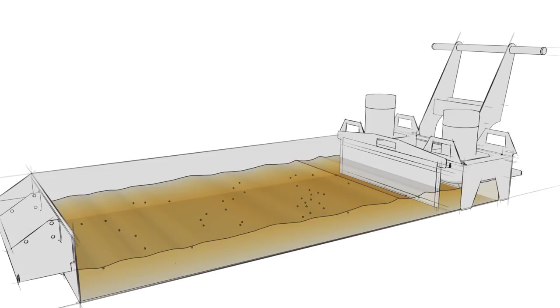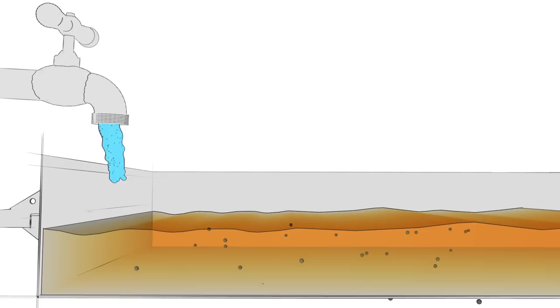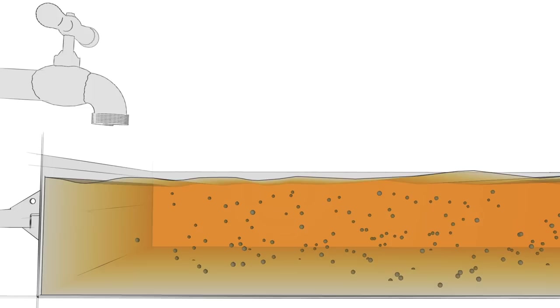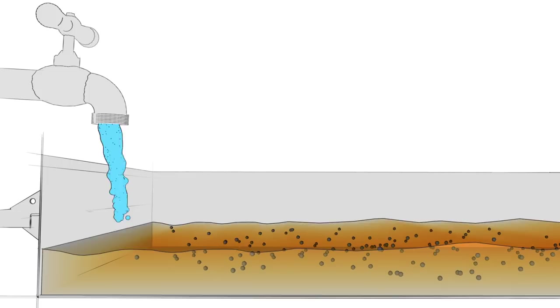Each time you top up the tank with tap water, a new batch of minerals is added to the mixture. After a few rounds of this evaporate and top up cycle, you've got a tank packed with minerals and your coolant may be ruined.